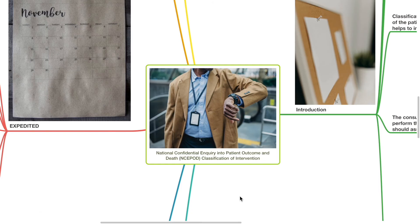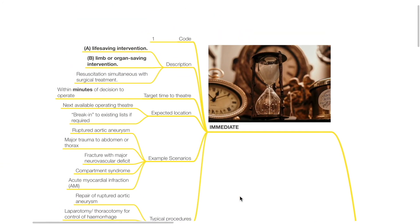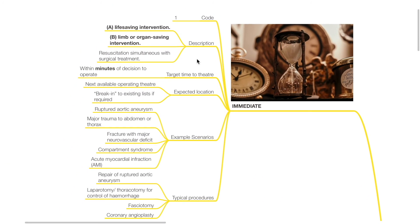The NCEPOD classification of intervention has four categories. The first category is Immediate, Code 1. Description: for life-saving intervention or limb or organ-saving intervention; resuscitation is simultaneous with surgical treatment. Target time to theatre: within minutes of decision to operate. Expected location: the next available operating theatre; break into existing list if required.